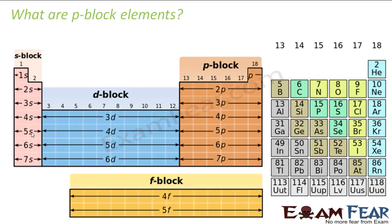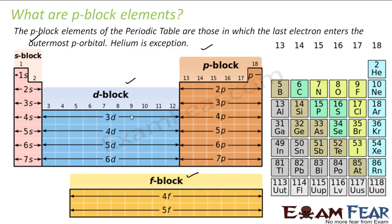The first question is: what are P-Block Elements? Looking at the periodic table, the S-Block is on the left-hand side. Then you have P-Block, then D-Block, and then F-Block. By definition, P-Block Elements are the elements in which the last electron enters the outermost P-orbital. That is why it is called P-Block.